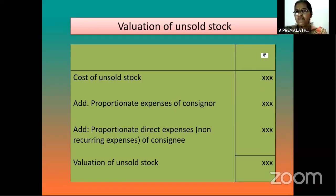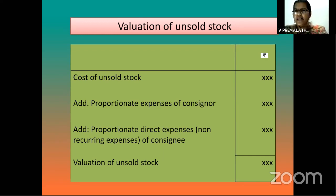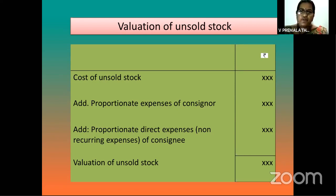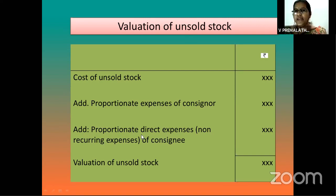Valuation of unsold stock means the cost of unsold stock. For example, if 100 goods are sent but only 80 are sold, the valuation of unsold stock is for 20 radios. The proforma: take cost of unsold stock (20 radios × cost price), add proportionate expenses of consigner, and add proportionate direct expenses or non-recurring expenses of consignee only. Then you get the valuation of unsold stock. Why proportionate? For example, if a consigner purchases two machines and pays ₹5,000 transport charges, this 5,000 must be divided equally — ₹2,500 per machine — and added to each machine's cost.